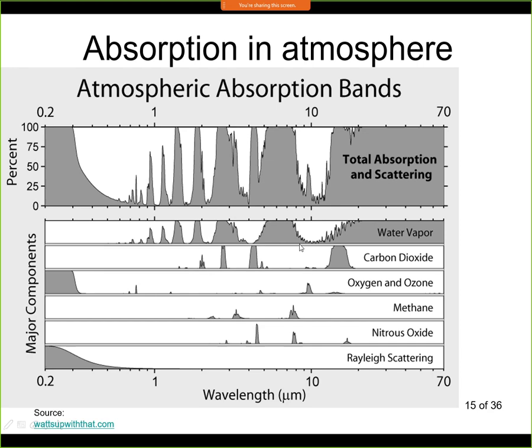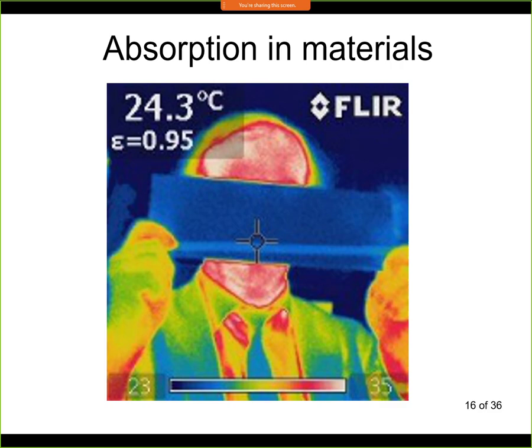Here is an example of absorption: a thermal camera image of a person holding a piece of plexiglass. Some materials like glass and plexiglass are transparent in the visible spectrum, but they are not transparent in the IR band. The plexiglass blocks the IR radiation, so only part of the face is visible and the area behind the plexiglass appears as a cold surface. Not all materials transparent to the eye are transparent to IR cameras.